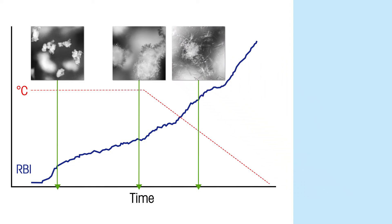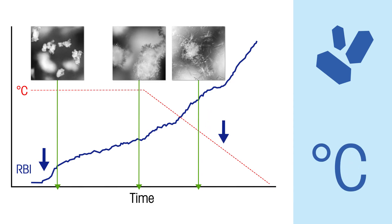Using this mechanistic insight, two actions can be taken. First, look at how the seeds are prepared and try to avoid this dendritic growth. And secondly, look at slower cooling to minimize the secondary nucleation.